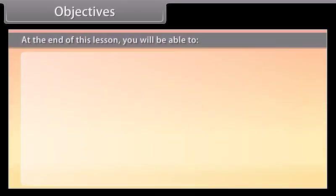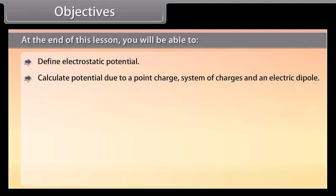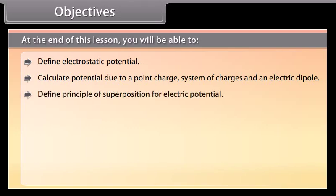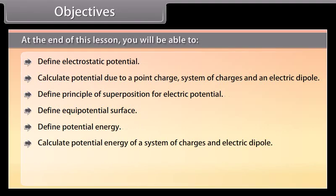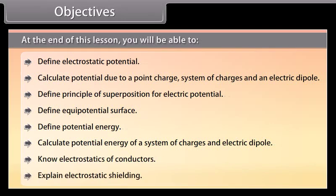Objectives: At the end of this lesson, you will be able to define electrostatic potential; calculate potential due to a point charge, system of charges, and an electric dipole; define the principle of superposition for electric potential; define equipotential surfaces; define potential energy; calculate potential energy of a system of charges and electric dipole; know electrostatics of conductors; and explain electrostatic shielding.